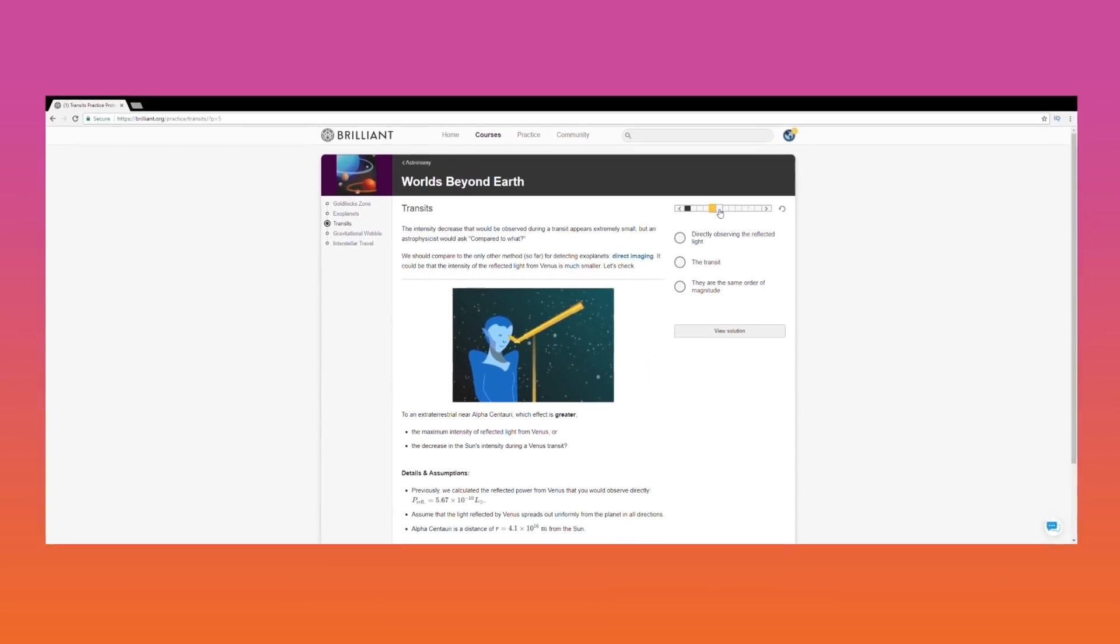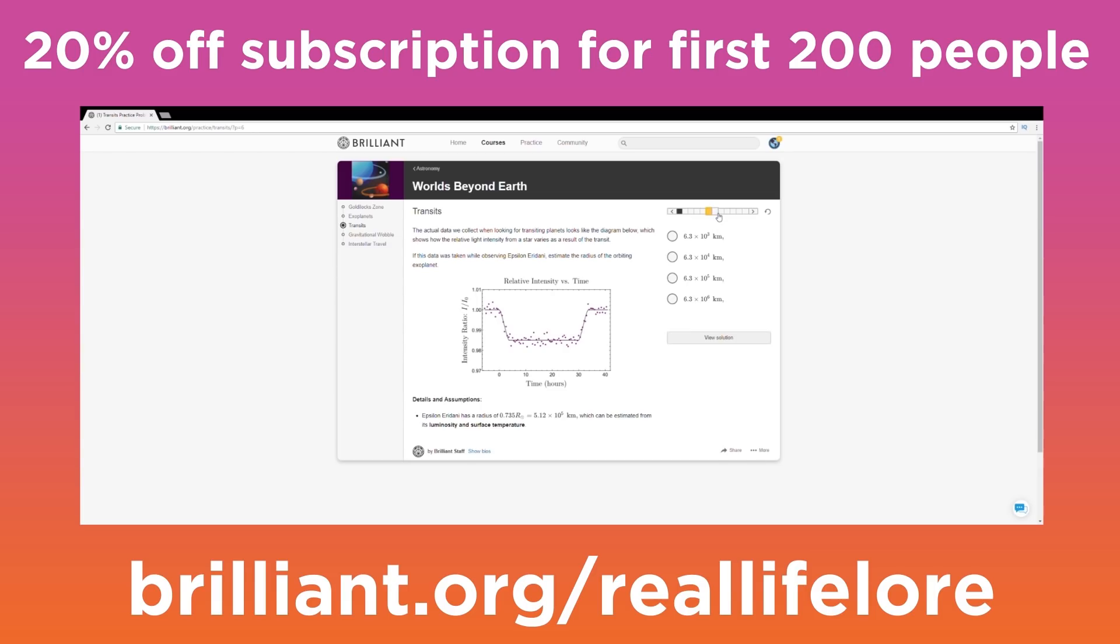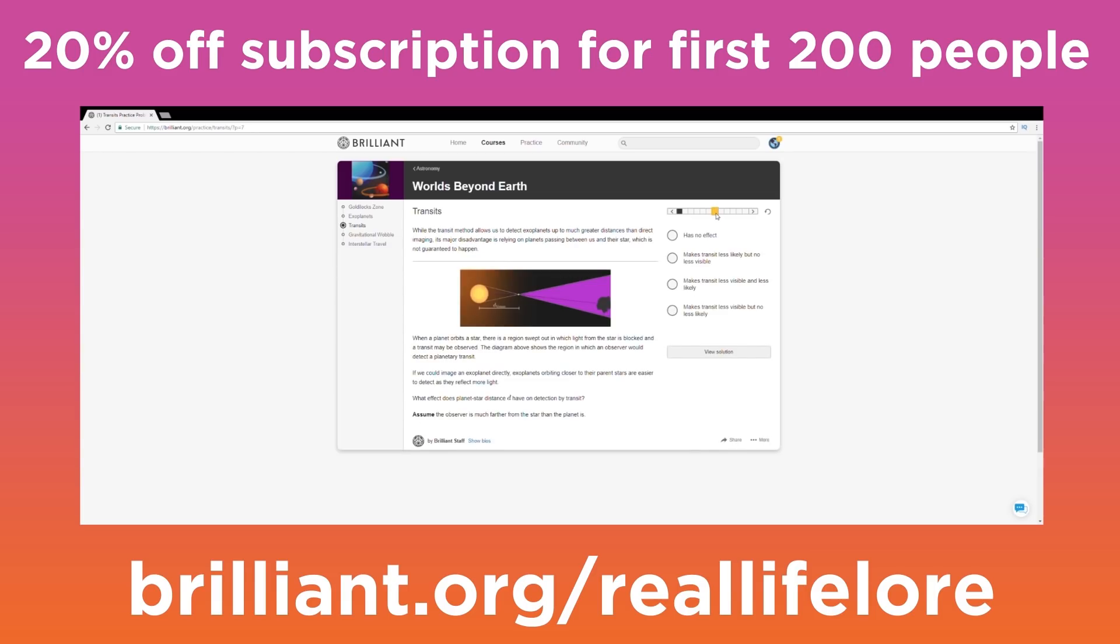You can try the first chapter for free over at brilliant.org slash real-life lore, and the first 200 people who decide to upgrade to the premium subscription will receive 20% off.